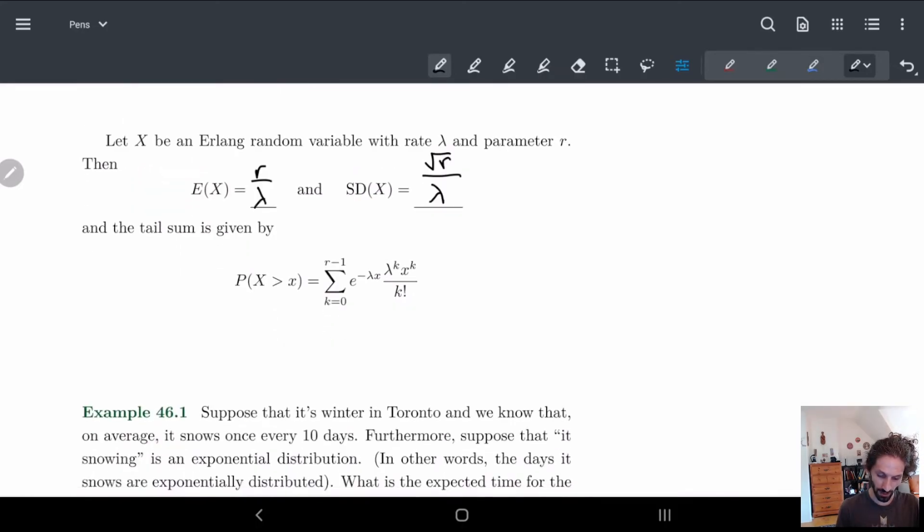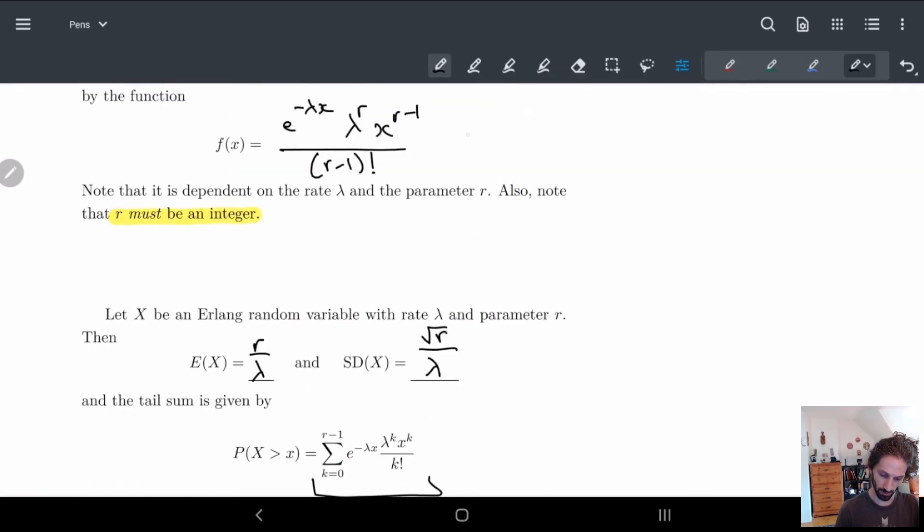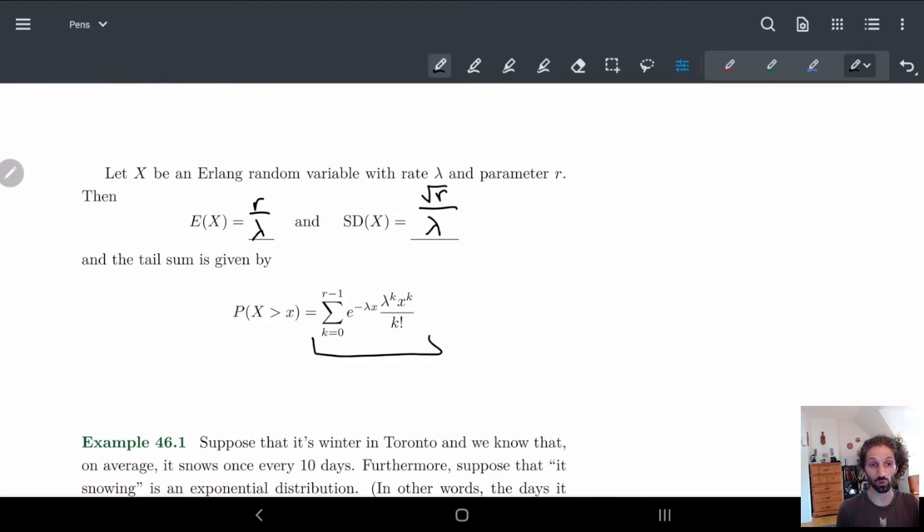And the tail sum is actually also really easy. So here I've written it out so I don't make a mistake. But this is it. This is just the formula for the tail sum. It's not too bad. And it's basically just summing over all of these things. It basically is just this formula repeated k times. So it's a little intense. But it's not too, too bad.